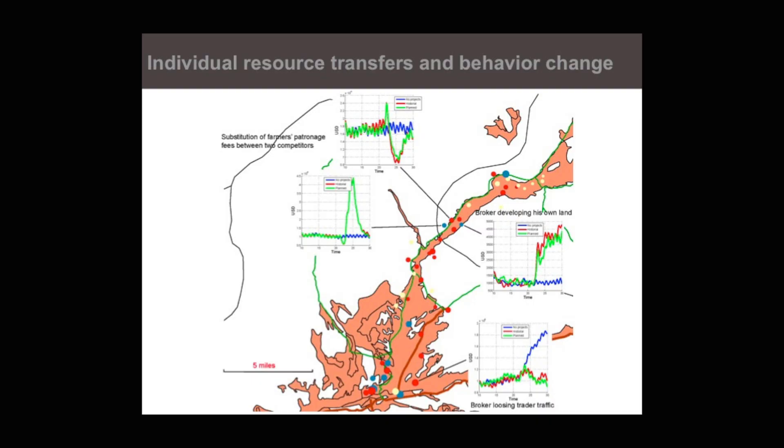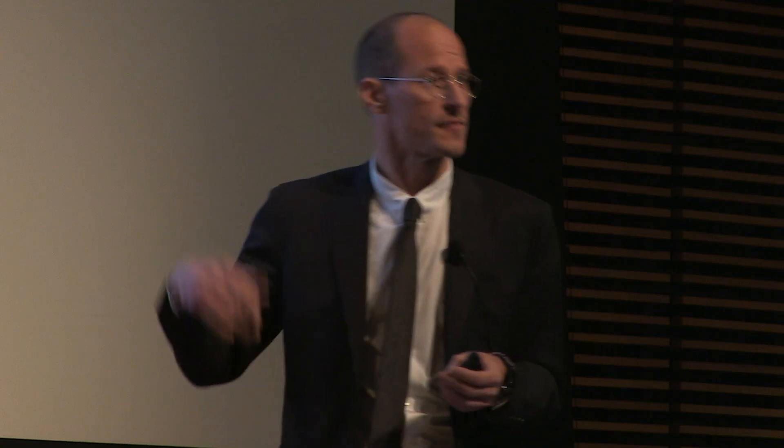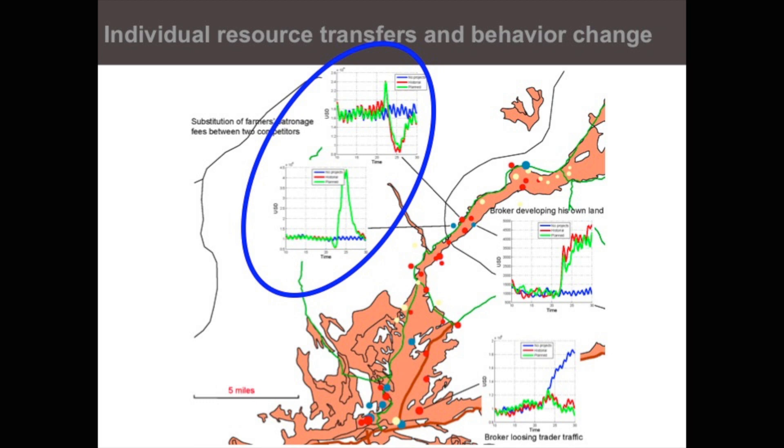But these macro patterns and dynamics do feed back into the micro level and change individuals' behaviors and therefore interactions. Furthermore, some individuals — for example power brokers — can strategically manipulate the macro level. I can give you an example from this simulation output.